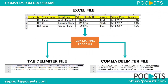Let me run through the requirement. Let's say you have an Excel file something like this — you have columns, you have rows, and then you want to read this Excel file and convert it into a tab delimiter file or a comma delimiter file.